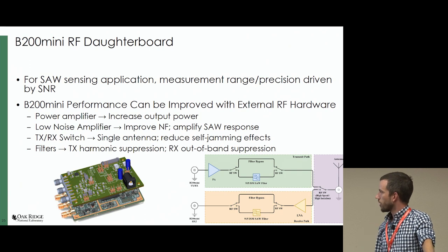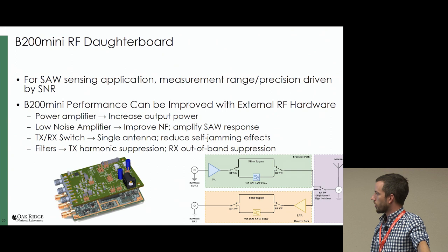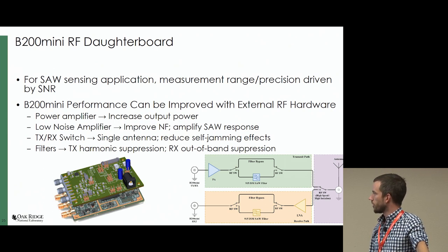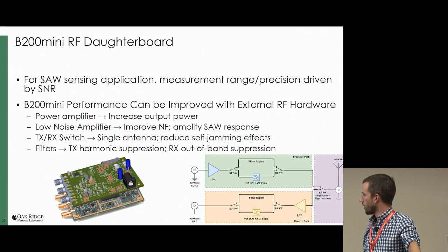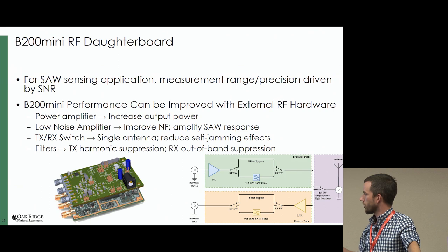Hardware is also an important factor. We designed a daughter board for the B200 Mini. It's got a power amplifier and an LNA TRX switch to switch the transmit and receive channels between a single antenna. It has a pretty basic layout — transmit through a power amplifier, you can switch between straight through or through a SAW filter, and then a Mini-Circuits high-speed RF switch that switches the interrogation antenna. Back through an LNA and the same filter, then received by the radio. It's designed to fit on top, get a little bit of extra output power, and a little better sensitivity on the received sensor.